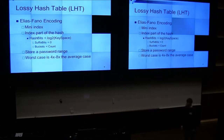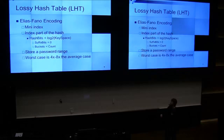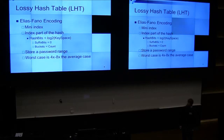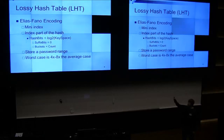The other algorithm is Elias-Fano encoding. Same thing — we split into baskets, except these are going to be smaller, so the lookup doesn't require reading as much data. We only index part of the hash — we truncate to less than log base 2 of the number of elements in the full table. The suffix bits are zero, and that's encoded in Elias-Fano. Same thing — we store a password range. Worst case for this is four to eight times the average case.